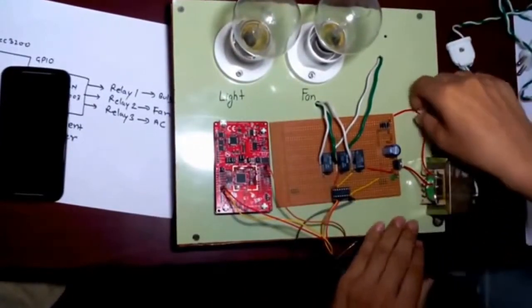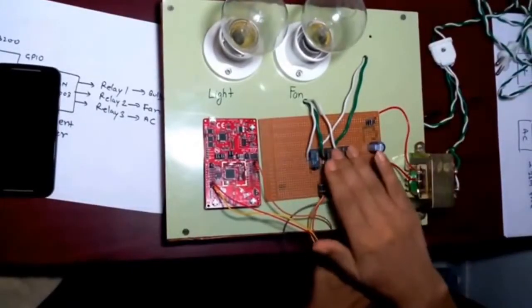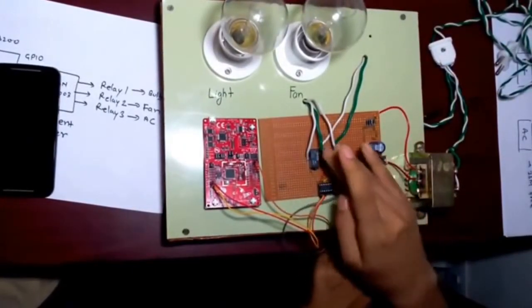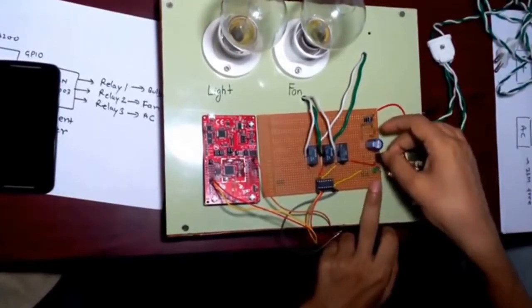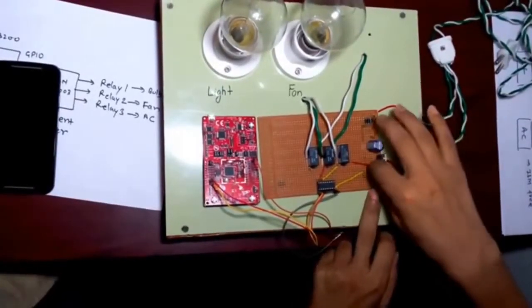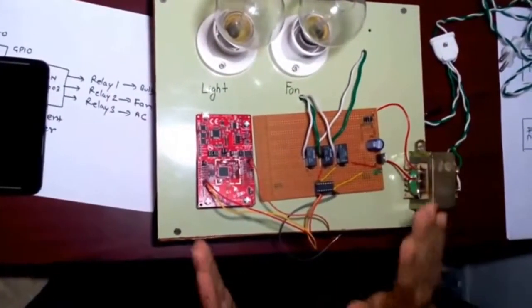This is the transformer and I am taking the output from the transformer to provide the power supply to this relay driver and this relay. This is the 7805 voltage regulator, positive voltage regulator. And this is the LED for showing indication whether power is on or off.